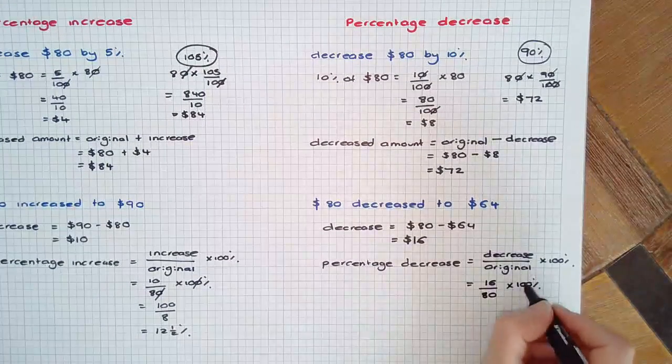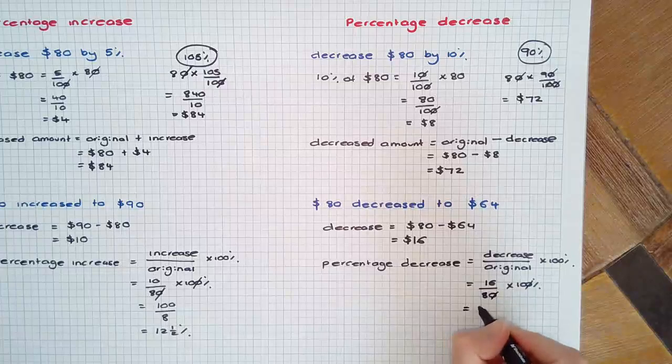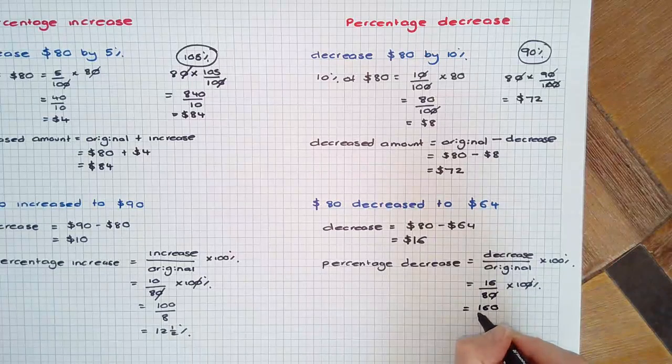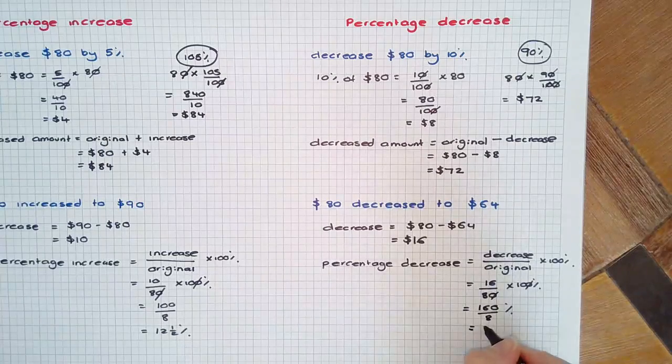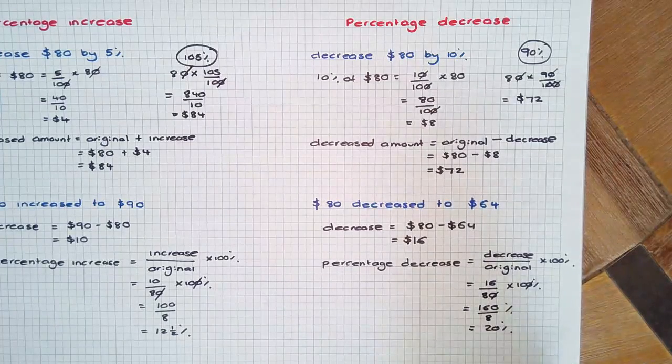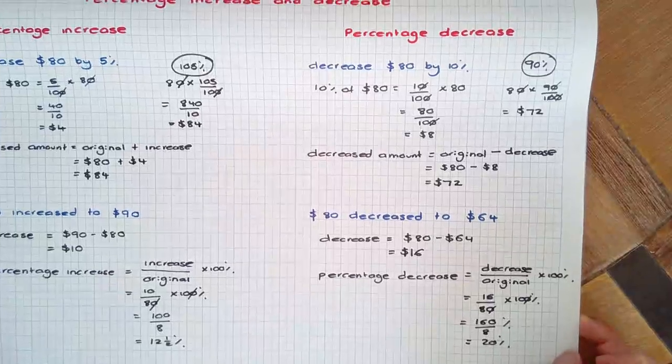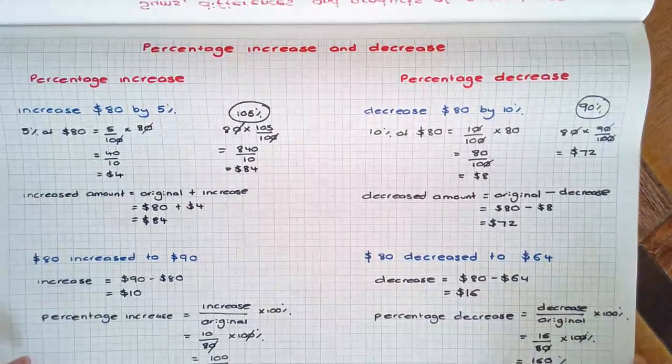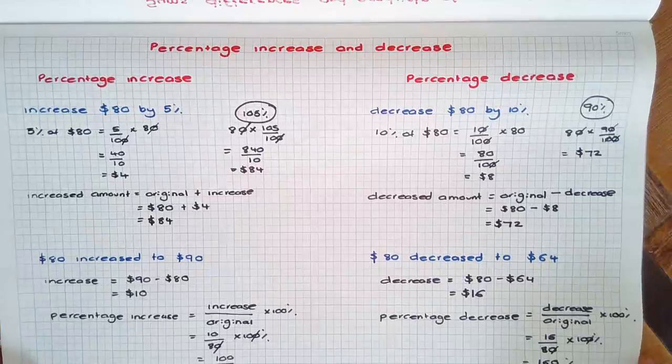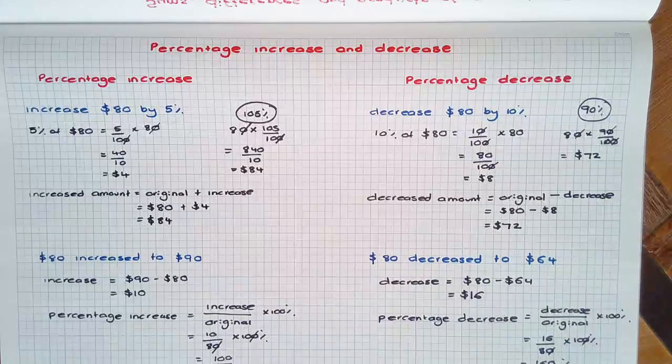Using some simplification again we have 160 over 8% which equals 20% reduction. So calculating percentage increases and decreases or finding the percentage increase or decrease.